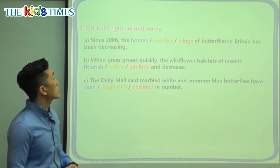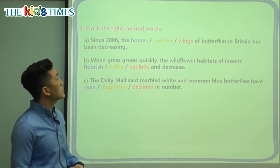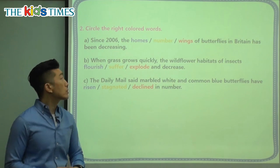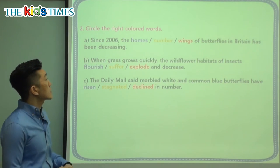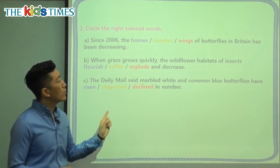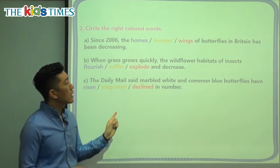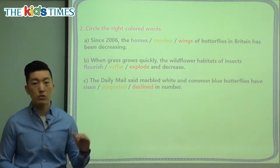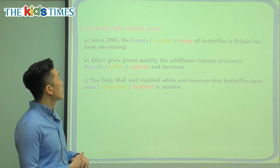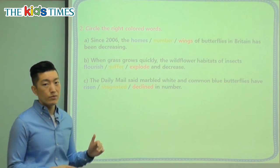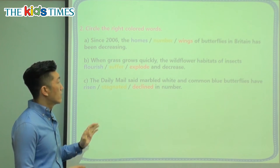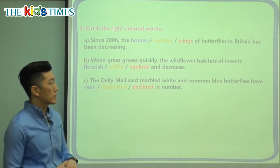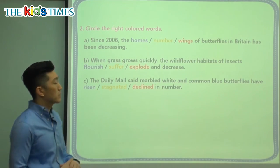So here, let's look at the choices and choose the correct one. It says since 2006, the homes, the number, or the wings of butterflies in Britain has been decreasing. Decreasing means going down. We know that the wings of the butterflies do not change. The number of butterflies, or the homes of butterflies in Britain, has been decreasing.